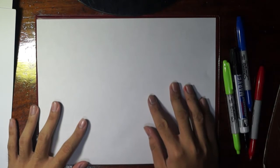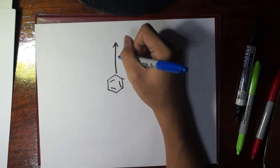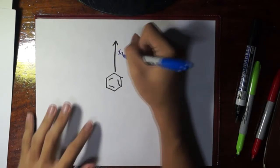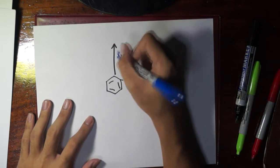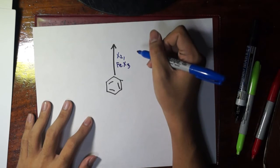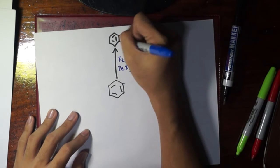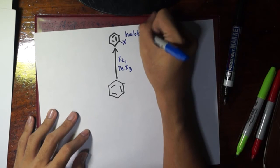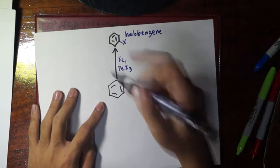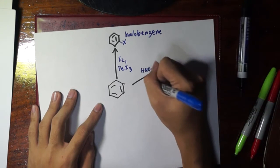Let's look at specific examples of electrophilic substitution reactions. First, halogenation: if we add X2 (a halogen) in the presence of a ferric salt catalyst, the product is simply a halobenzene — one halogen replaces one hydrogen on the ring.